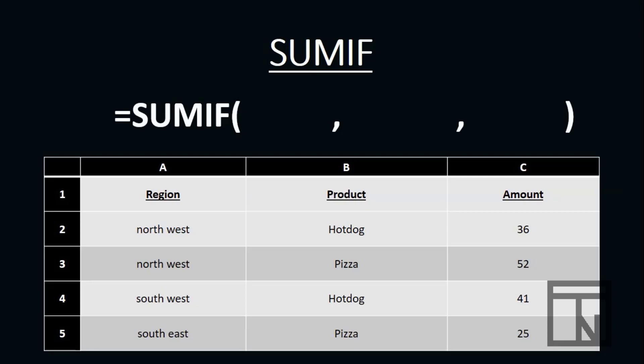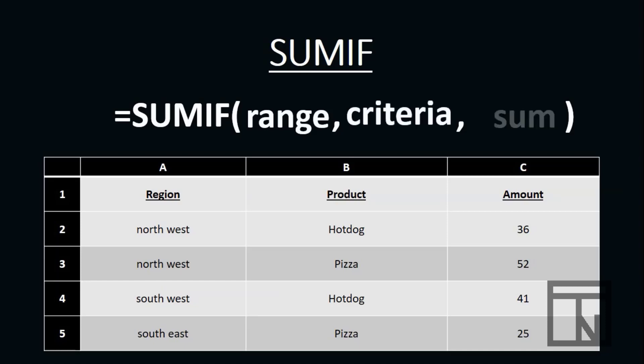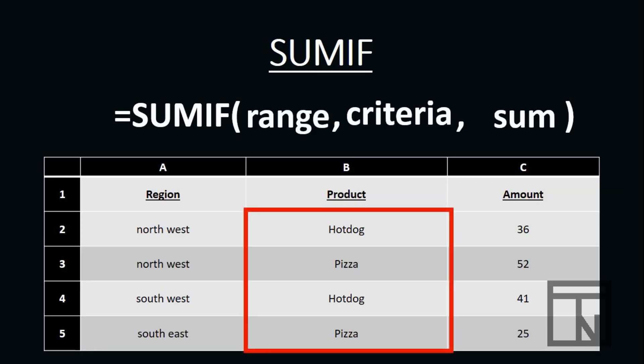In this case, we have three pieces of information that we need to know to create a SUMIF. First, we need the range that we're going to be looking for our search criteria in. Then we have the search criteria itself, and where we're going to find the numbers we're going to total. In our scenario, we were looking to total sales amounts for our hot dog product, so the range is where we're going to go searching for the product hot dog — in this case, column B, specifically cells B2 to B5.